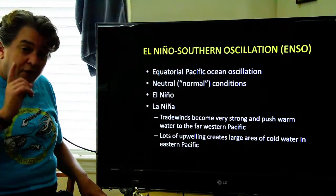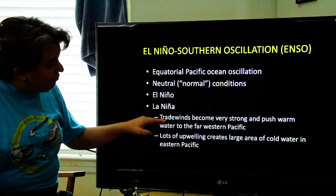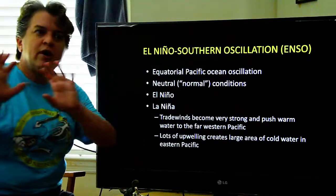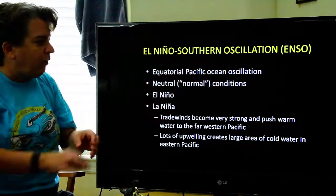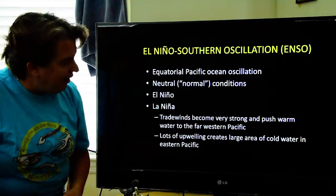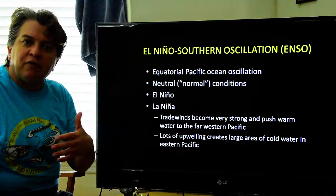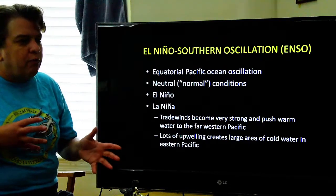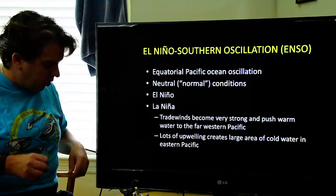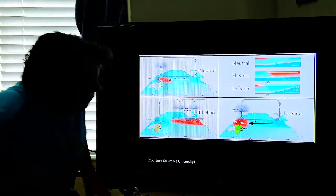Now there is also something called La Niña that can happen. And that's when the trade winds get extra strong. And so they really push that warm water away and make for extra cold water in the coastal areas of South America. And so depending on where this cold water is and where this warm water is can have, like I said, global impacts on the climate system.